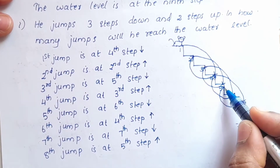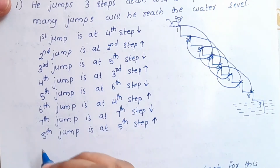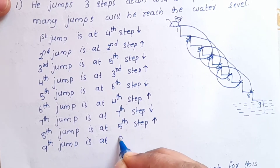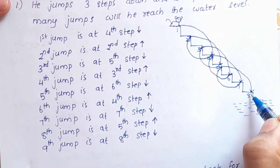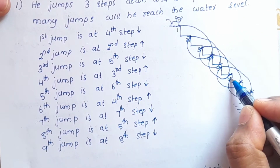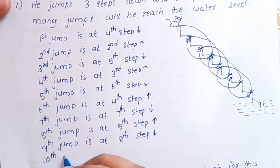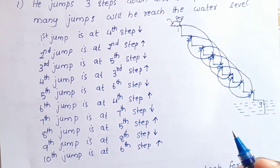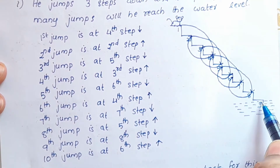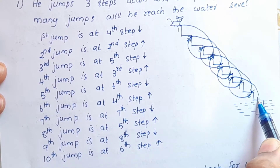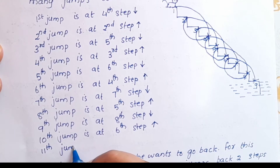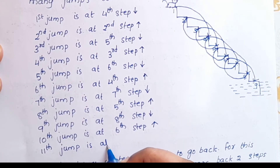From the 5th step, 3 steps down reaches the 8th step — that is the 9th jump. Continuing, 3 steps down from the 6th step reaches the 9th step, which is the water level. So the 11th jump lands on the 9th step, the water level.